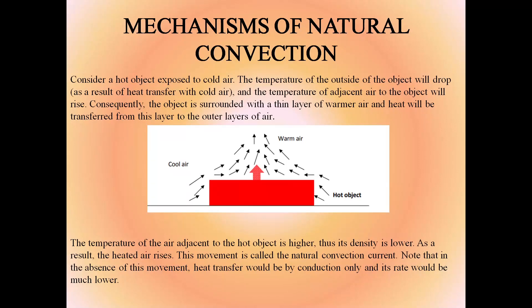Consider a hot object exposed to cold air. The outside temperature of the object drops due to heat transfer and the adjacent air temperature rises, creating a thin layer of warmer air around the object. Heat transfers from this layer to the outer air layers. The air adjacent to the hot object is at higher temperature and lower density, causing it to rise — this is the natural convection current. In the absence of this movement, heat transfer would be by conduction only and much lower in rate.